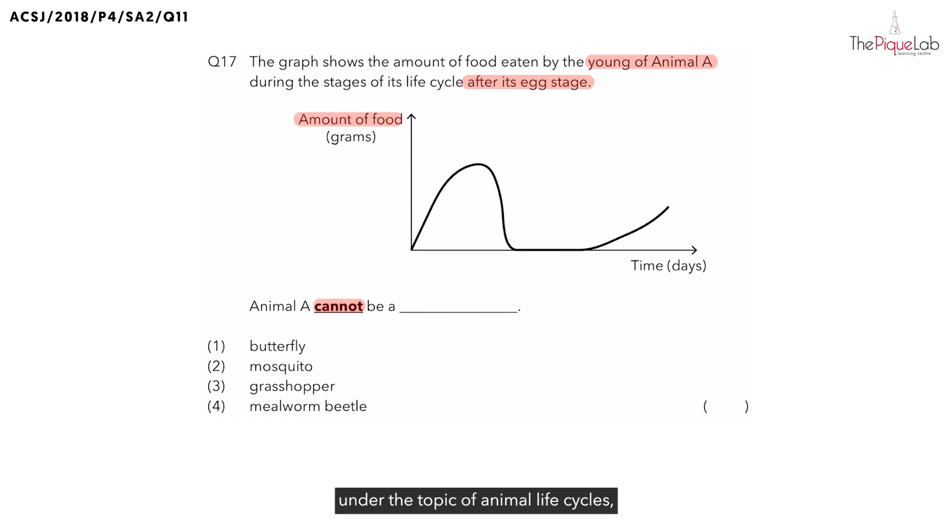Now, under the topic of animal life cycles, how many stages can there be? Animal A can either have a three or a four-stage life cycle. So, let's write that down. It can either have a three or a four-stage life cycle. So, with that, let's take a look at the graph.